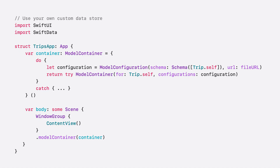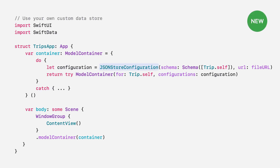Here in the implementation for the SampleTrips app, I can change the type of store just by replacing the model configuration with the JSON store configuration — an example I will implement later in this video. With just this one replacement, the model container now knows to use a different store type without requiring me to change any of the model or view code in the SampleTrips app.